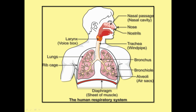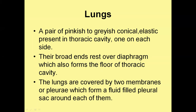The bronchi divide further into bronchioles, which terminate into sac-like structures referred to as alveoli. The lungs rest on a muscular structure called the diaphragm. Lungs are pinkish to grayish conical structures, elastic in nature, one on each side in the thoracic cavity, with the broad ends resting on the diaphragm. Lungs are covered by two membranes referred to as pleura, filled with pleural fluid. The two membranes along with the fluid between them form the pleural sac.